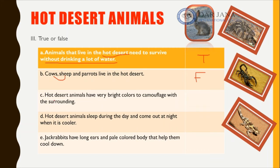'Hot desert animals have very bright colors to camouflage with the surroundings.' Look at the animals — they are not red, pink, or blue. They are very pale colors, not bright at all. So this is false.